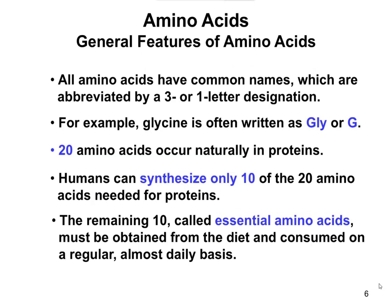Amino acids can be written by their full name, a three-letter code, or a one-letter code. For example, glycine is GLY or G. You don't need to memorize these codes — they are on the formula sheet provided on Blackboard. You may need to reference them to identify particular amino acids within a protein.